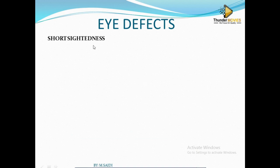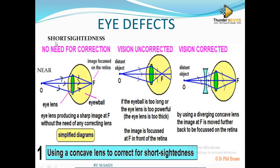Let's start with short-sightedness. Short-sightedness means you can see objects which are near. For an object which is near, you can see it — you don't need any correction. The eye lens produces a sharp image on the retina without any correcting lens. But objects which are far, you won't be able to see them.